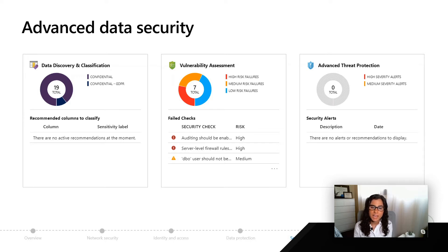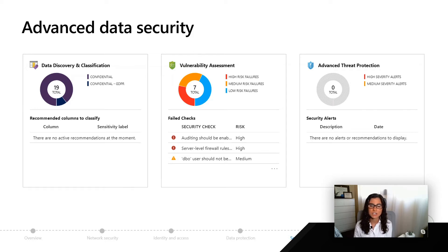For example, we have data discovery and classification, which is going to allow you to classify your data as sensitive or confidential as you want. Then we have vulnerability assessment, which is going to assess your database and try to make recommendations on how you could be more secure. Finally, we have Advanced Threat Protection, which leverages things like machine learning models to detect any dangerous situations with your database.